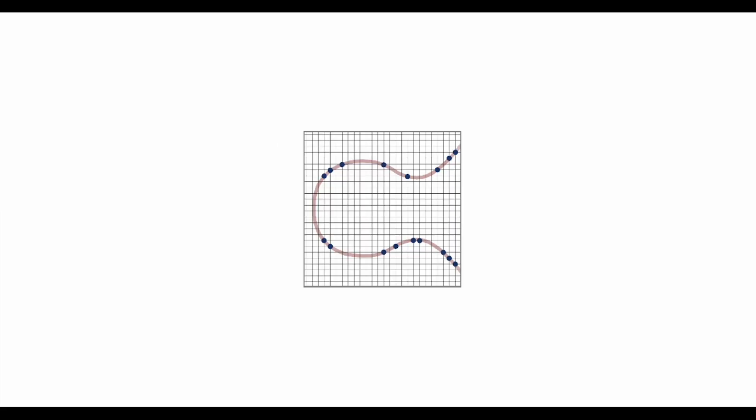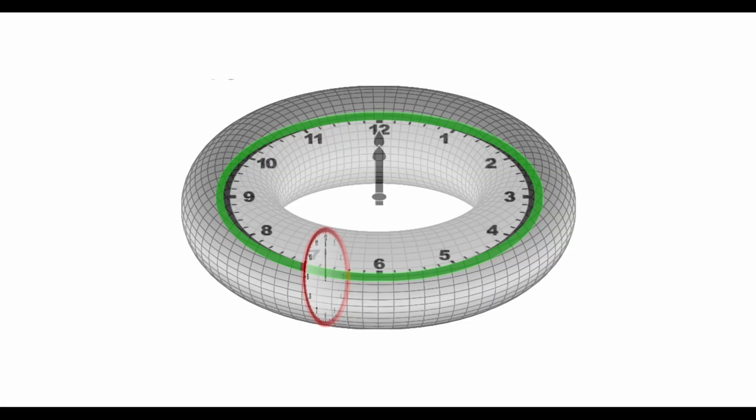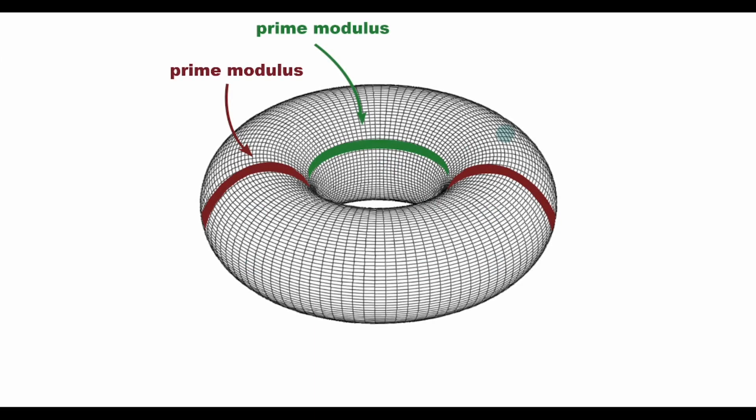Now, because the elliptic curve uses modular arithmetic, it actually wraps back onto itself. There's a cool way to visualize this on a torus. The torus provides another way to understand modular arithmetic as it applies over two dimensions. So now we see that as these numbers dance along the curve, they're actually traveling around on the surface of a torus.